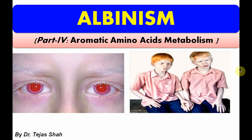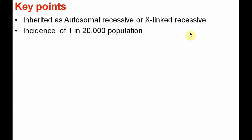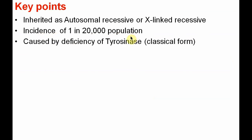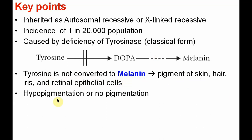Let us see some key points. Albinism is inherited as autosomal recessive or X-linked recessive disease. Its incidence is 1 in 20,000 population. It is caused by the deficiency of enzyme tyrosinase in the classical form, where tyrosine is not converted to melanin — the pigment of our body, skin, hair, iris, and retinal epithelial cells.